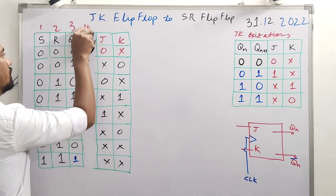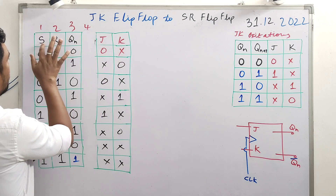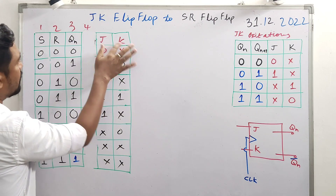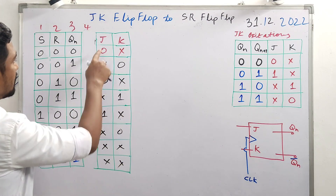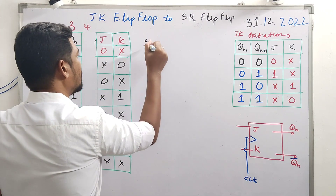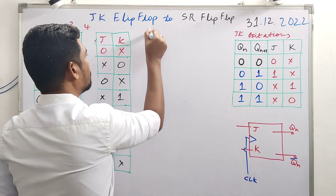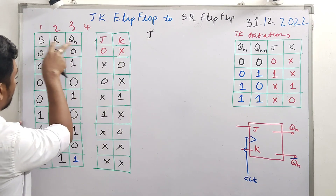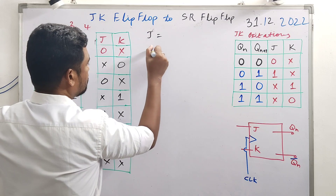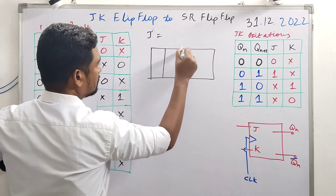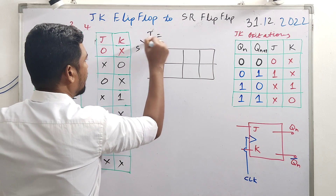Now from this table we derive the relationship between SR and JK. We set up a K-map to find J in terms of S, R, and Q(n). We are trying to find J - doing a three-variable K-map with S, R, and Q(n) as variables.